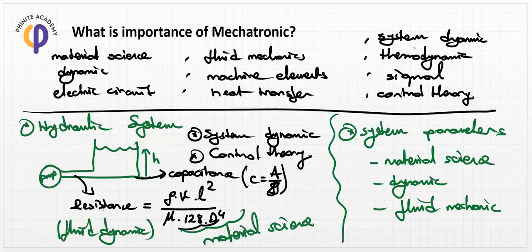This is very important: in mechatronics, we utilize the base structure of system dynamics and control theory, but the correct system coefficients can only be determined using material science and fluid mechanics. In a heat system, we need heat transfer to calculate the resistance value, and thermodynamics to calculate the capacitance value of any heat system.